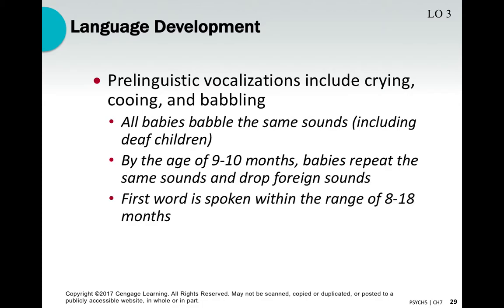Let's talk about how language develops. We're not born producing language — we develop it as our brain and body develop. At first we use pre-linguistic vocalization such as crying, babbling, or cooing sounds. These are sounds babies make while figuring out the fine motor skills of using their mouths. Crying is often the only way they know how to say 'I'm hungry,' 'I need to be soothed,' or 'I'm in pain' — it's the only communication tool they have initially.